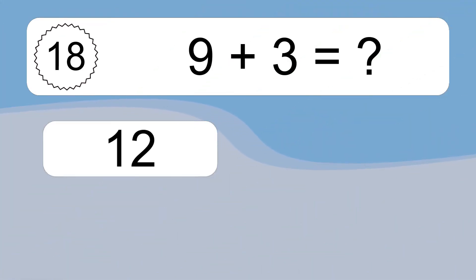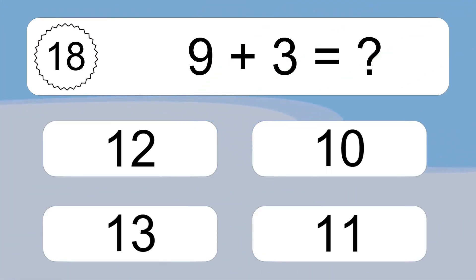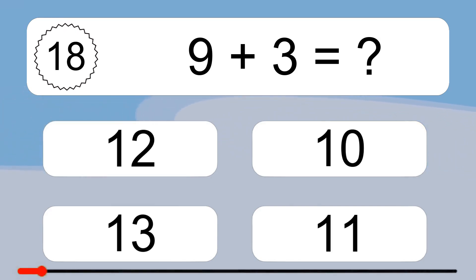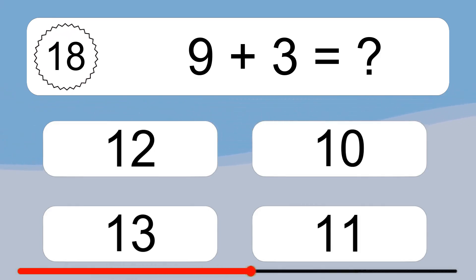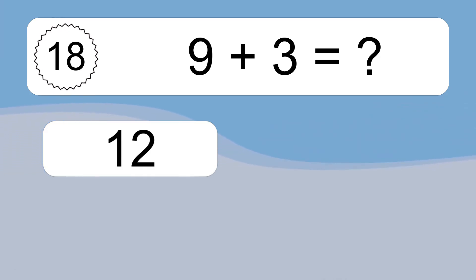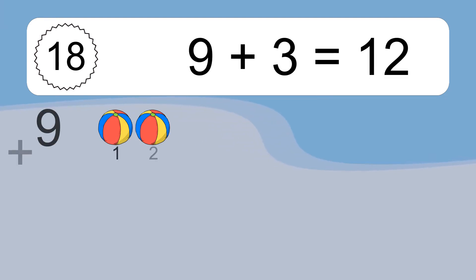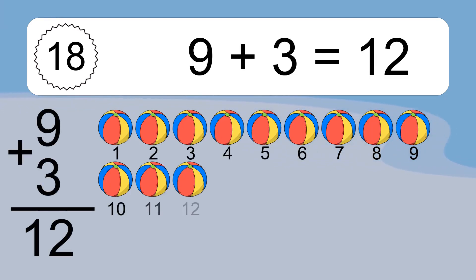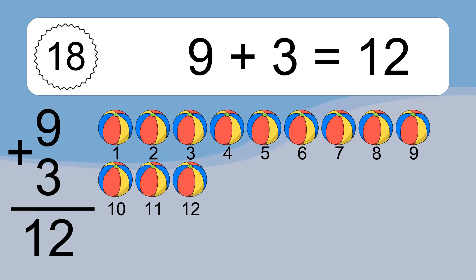9 plus 3 equals what? 9 plus 3 equals 12. Let's count it: 1, 2, 3, 4, 5, 6, 7, 8, 9, 10, 11, 12.